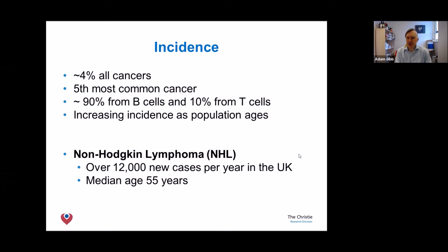Overall, lymphoma is the fifth commonest cancer and forms around four percent of all cancers. Most lymphomas are derived from B-cells and some from T-cells. With regards to non-Hodgkin lymphoma, we get around 12,000 cases per year in the UK, and the average age of diagnosis is 55 years.